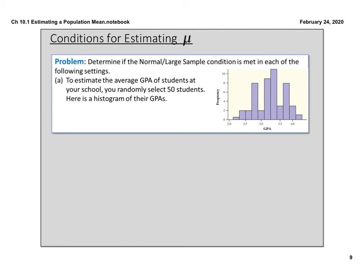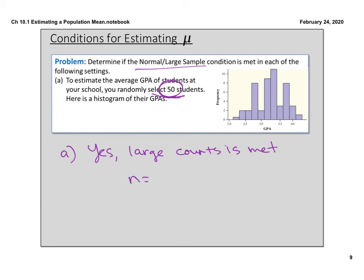Let's practice. Part A: to estimate the average GPA of students at your high school, you randomly select 50 students. Here's a histogram of their GPAs. The histogram kind of appears normal — it has three peaks which makes it a bit unusual. But all of that doesn't matter because the large counts condition is met, since n = 50, which is greater than or equal to 30.